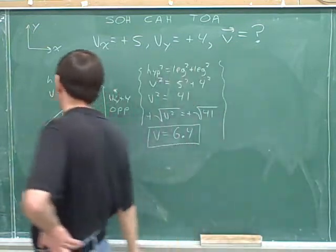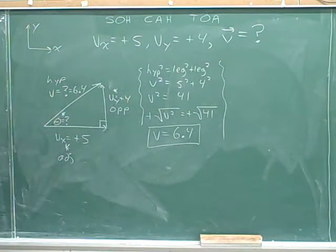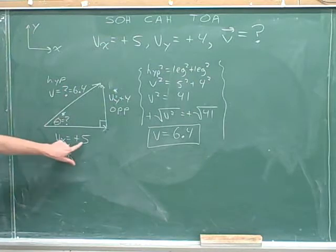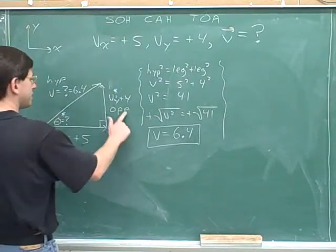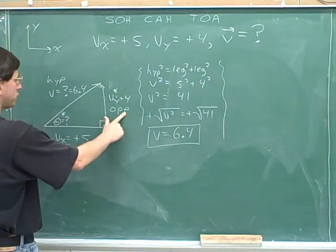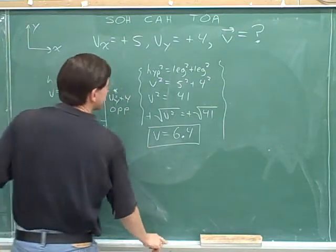Now we're going to need a trig function. What would be a good trig function to use? Well, remember the convention is to use the sides we were originally given. That was indicated by the asterisk. Originally we were given this side adjacent and this side opposite. So we need a trig function that deals with the opposite and the adjacent sides.